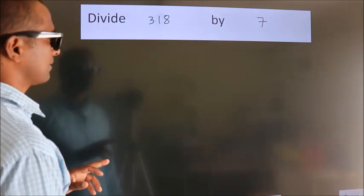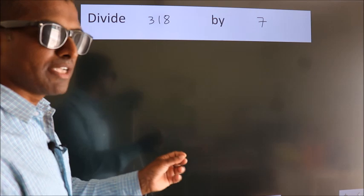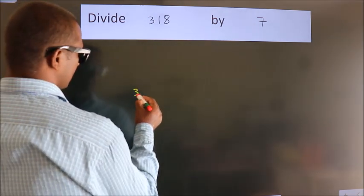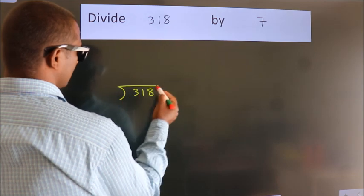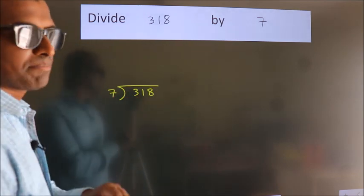Divide 318 by 7. To do this division, we should frame it in this way. 318 here, 7 here. This is your step 1.